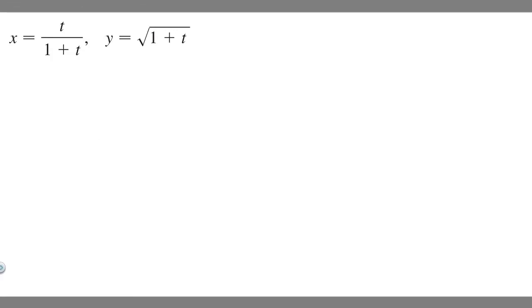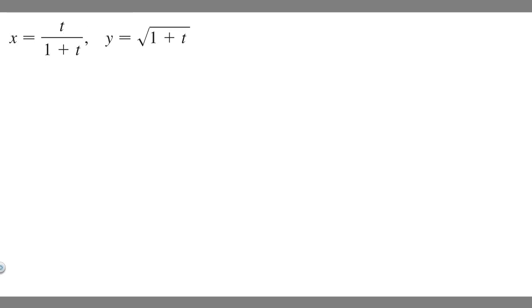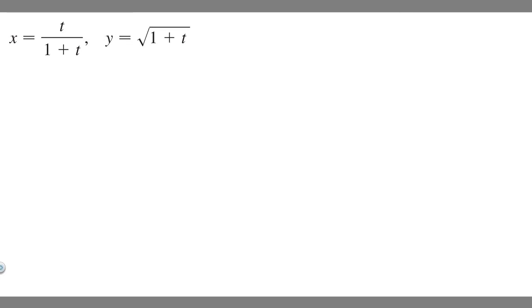In this problem, we're given two different parametric equations and we're trying to find dy/dx. We're given that x equals t over 1 plus t, and y equals the square root of 1 plus t. So let's go ahead and solve.